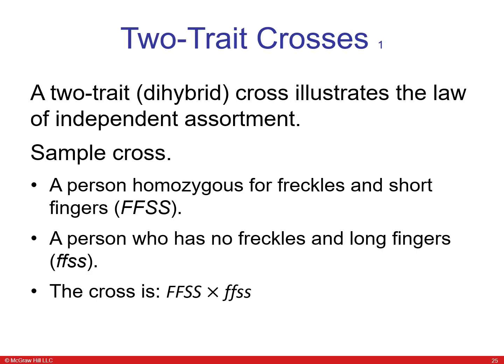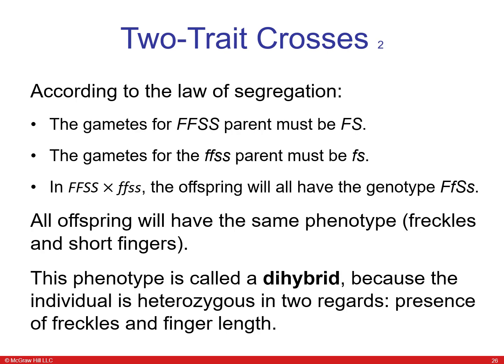You can also perform dihybrid crosses — two-trait crosses — which illustrate the Law of Independent Assortment. In a sample cross, a person homozygous for freckles and short fingers (FFSS) mates with a person with no freckles and long fingers (ffss). According to the Law of Segregation, the gametes for FFSS must be FS and for ffss must be fs. All offspring have the same phenotype — freckles and short fingers — because the dominant alleles control the phenotype.